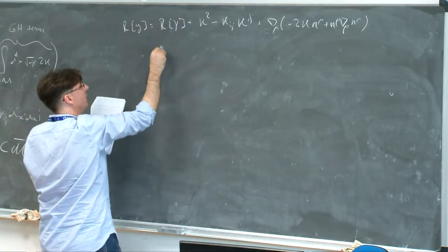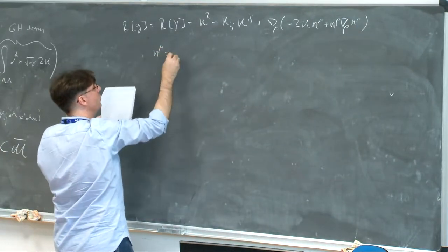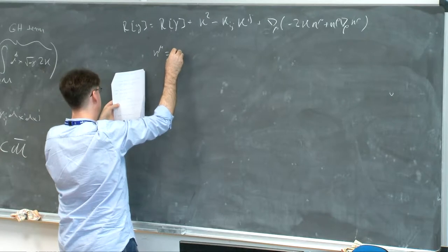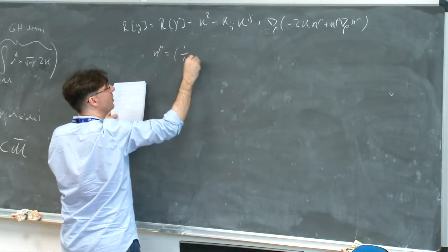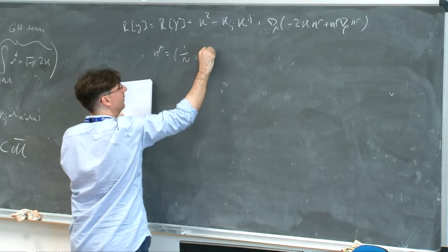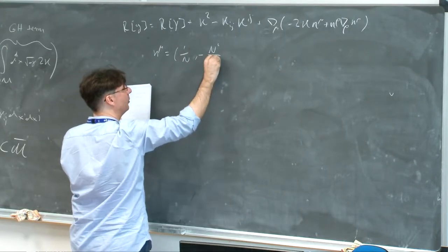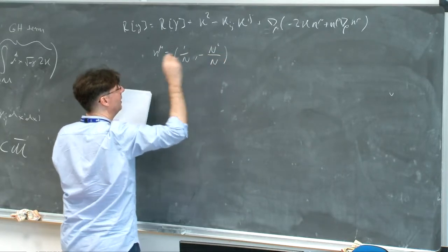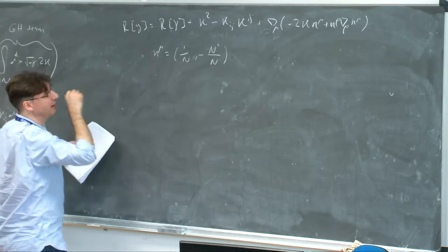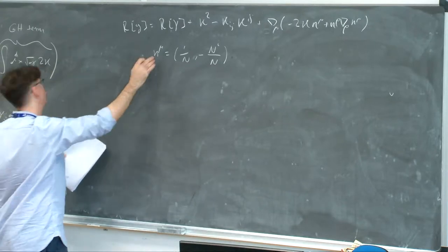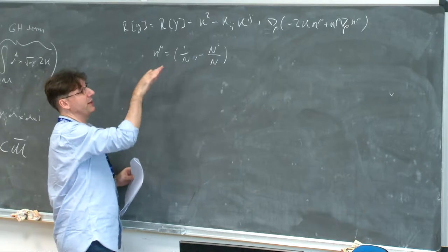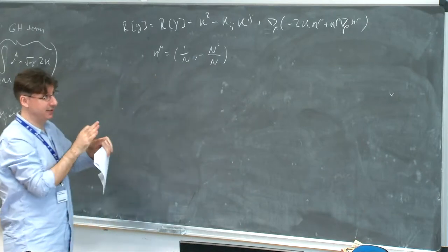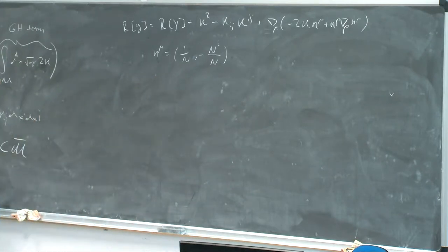Where this vector n_mu can be expressed: the radial component is 1 over n, and the transverse component is minus n_i over n. And it's normalized — it's a unit vector. You can compute the normal using this metric and see that it's normalized. The orientation is such that it is outward, like a long increasing radial chord.